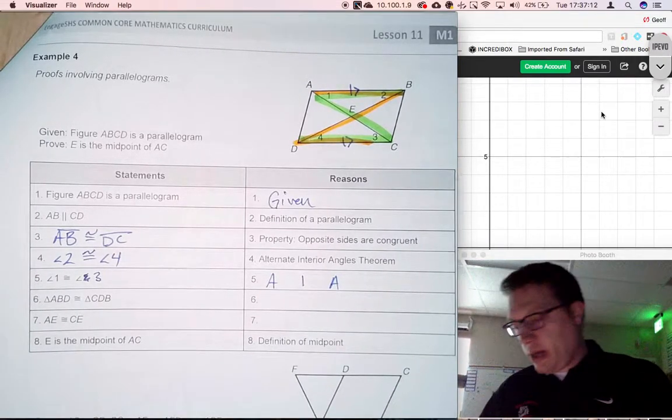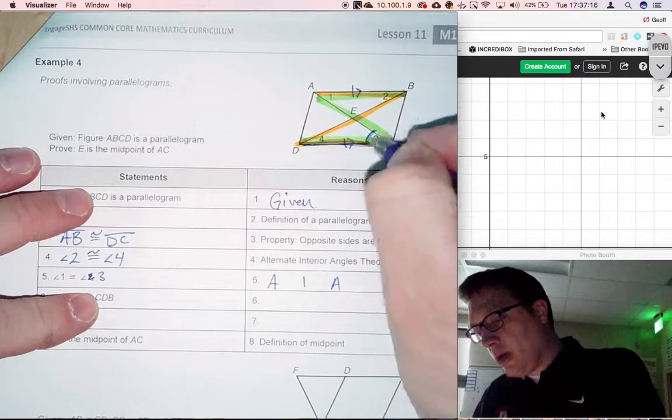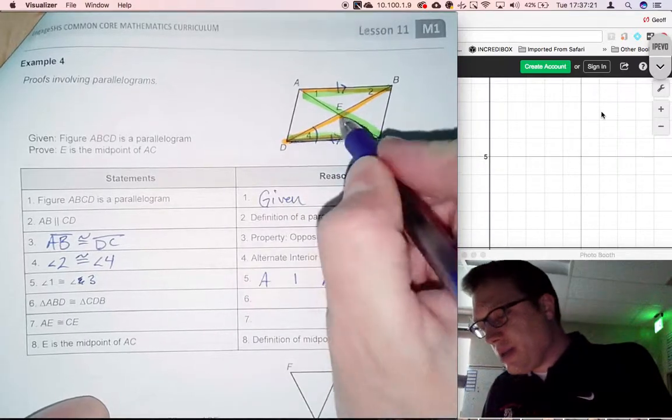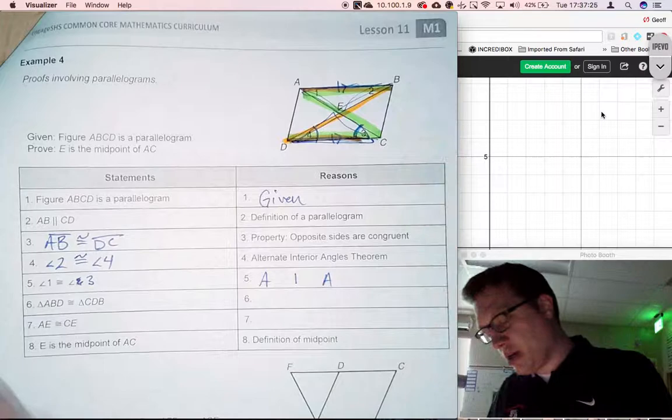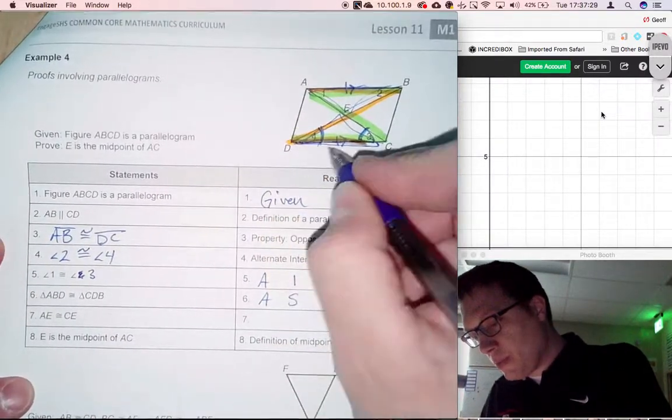So therefore, here's what we have: a side, an angle, and another angle. The way they are oriented tells us this entire triangle is exactly the same as this entire triangle by angle-side-angle.